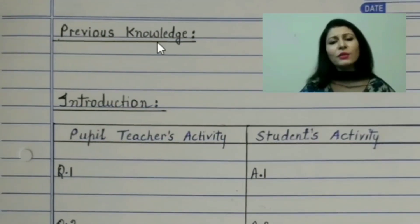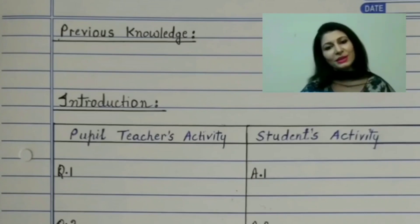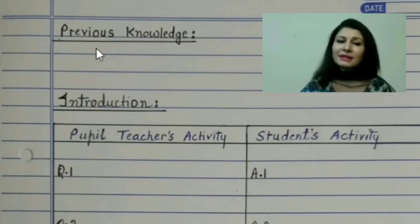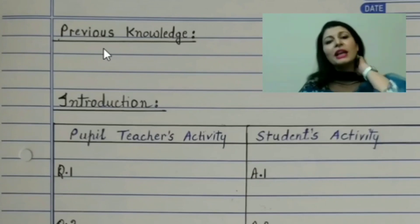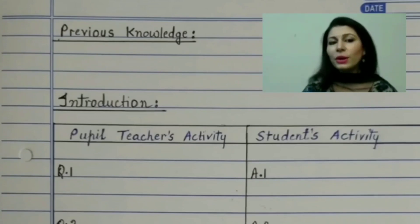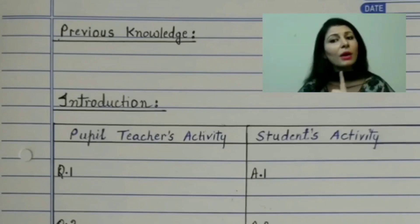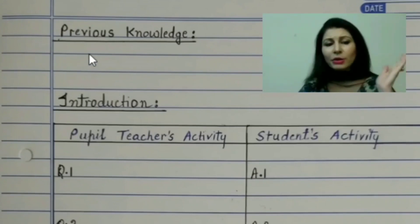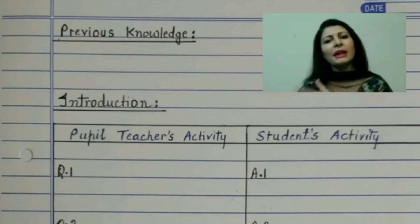Then the next heading would be previous knowledge. Here you will mention what the child already knows which will help him in understanding the present topic. For example, in history events are always given in chronological order. So if you are going to teach Akbar in class, then the children must have already learned about Humayun. Here you have to write in just a single line that students know about Babar and Humayun.